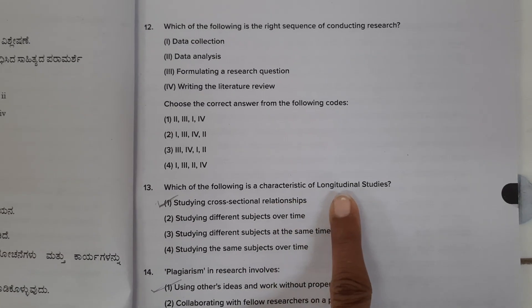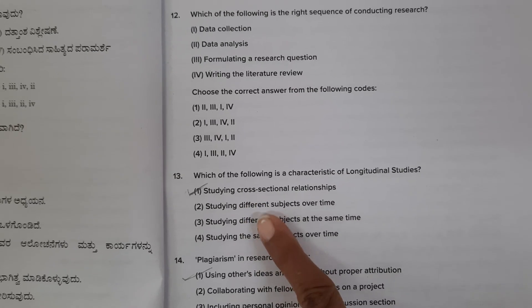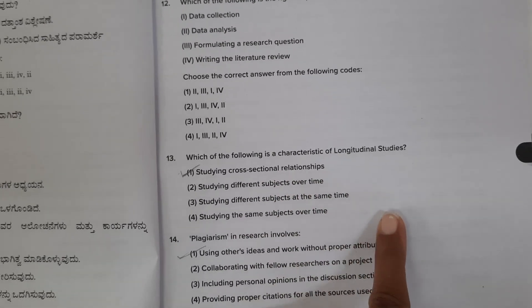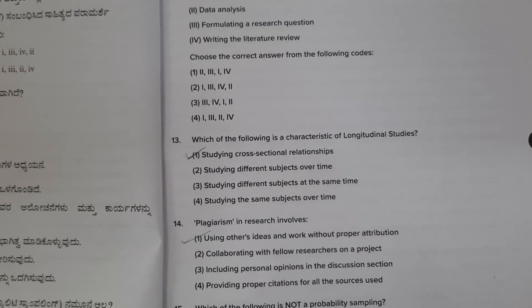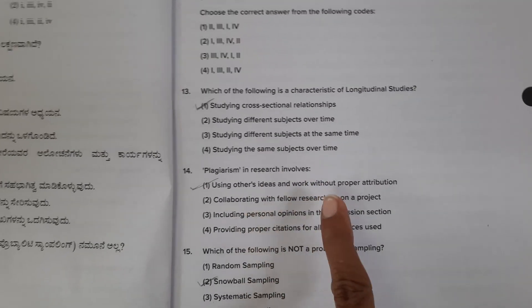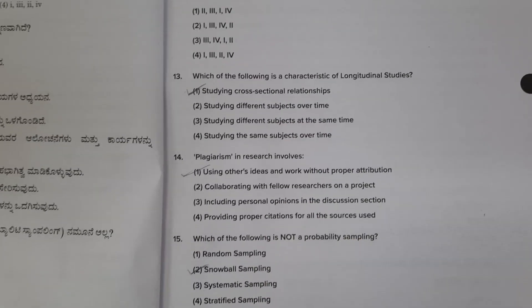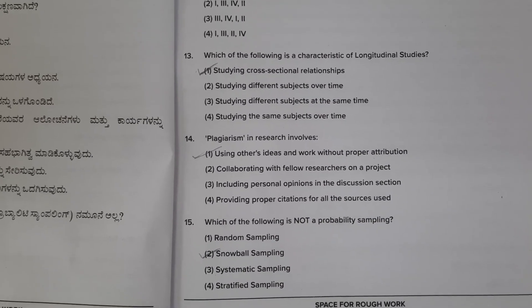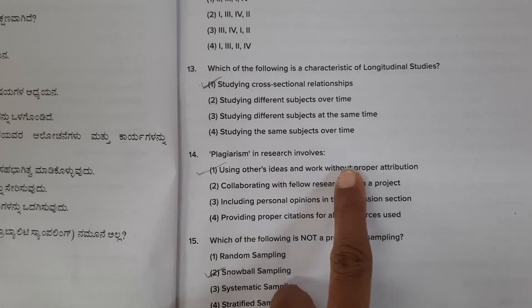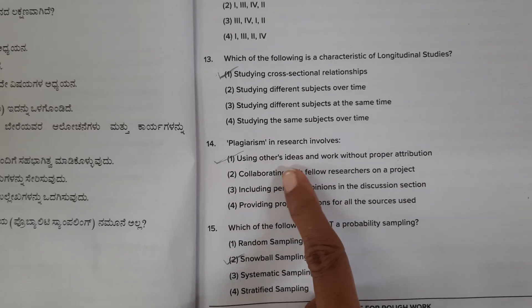Which of the following is a characteristic of longitudinal studies? Among all the options, studying cross-sectional relationships is the answer, as per my knowledge. Next, plagiarism in research involves copying someone's ideas knowingly or unknowingly — using others' ideas and work without proper attribution is the correct option.